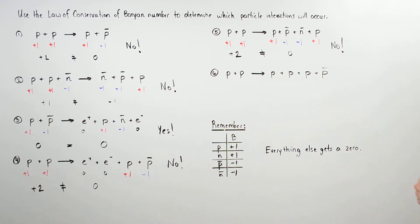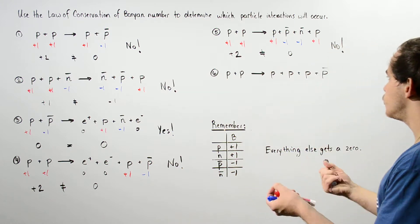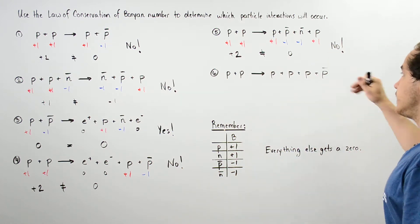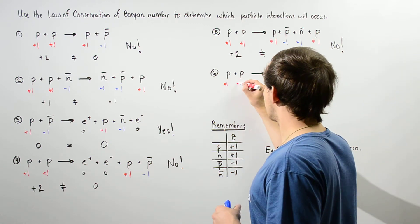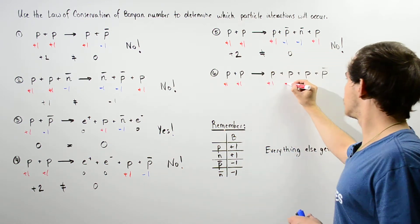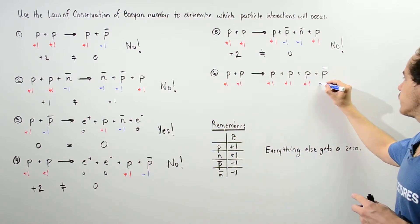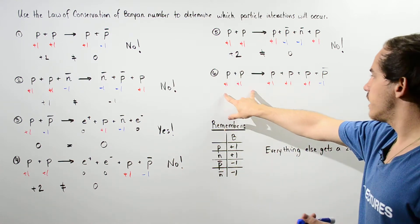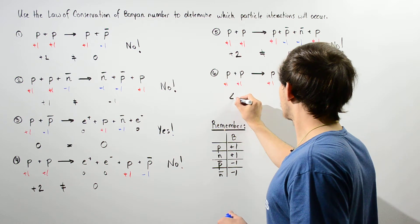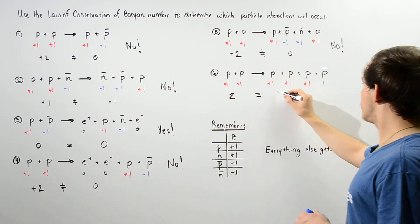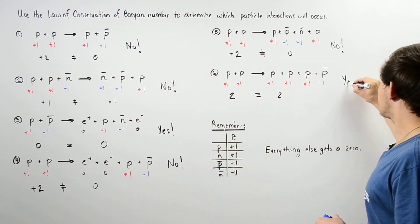Finally, our last interaction: two protons interact with one another to produce three protons and an antiproton. All protons get positive one, and the antiproton gets negative one. On the left side we have positive two, and on the right side we have three minus one, which also equals two. Since both sides are equal, this reaction does occur.